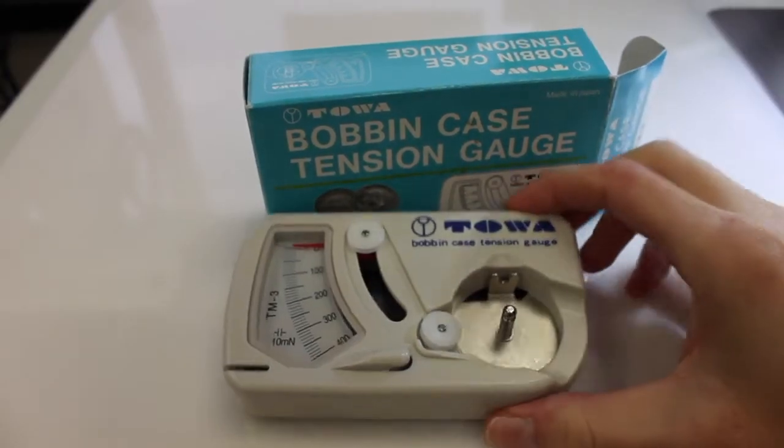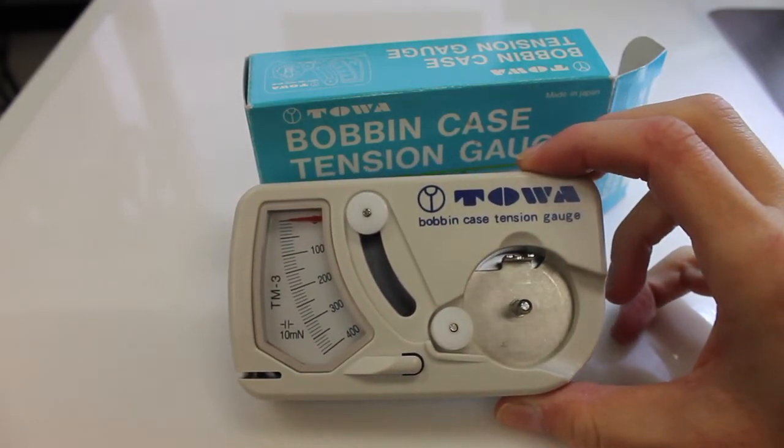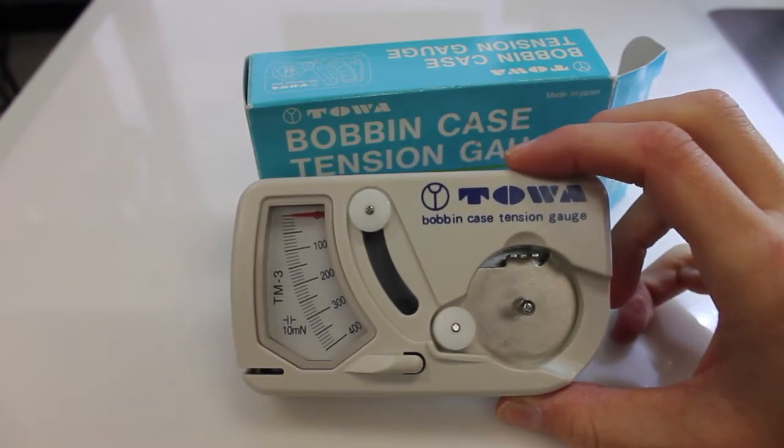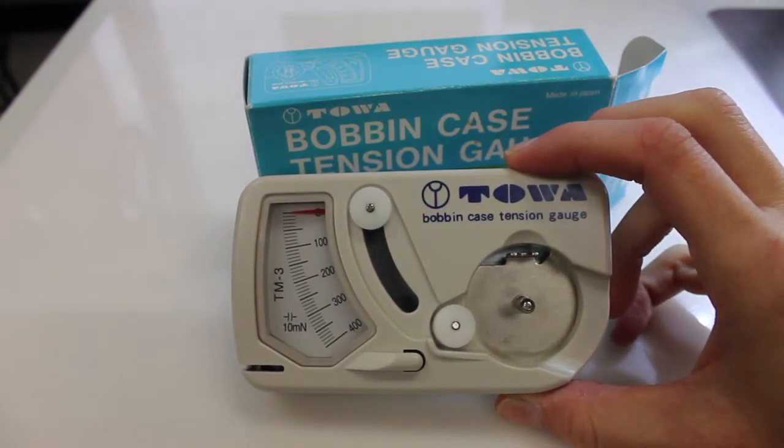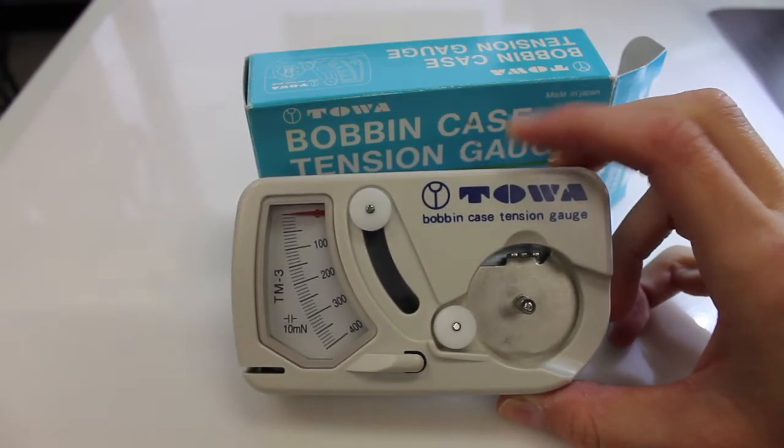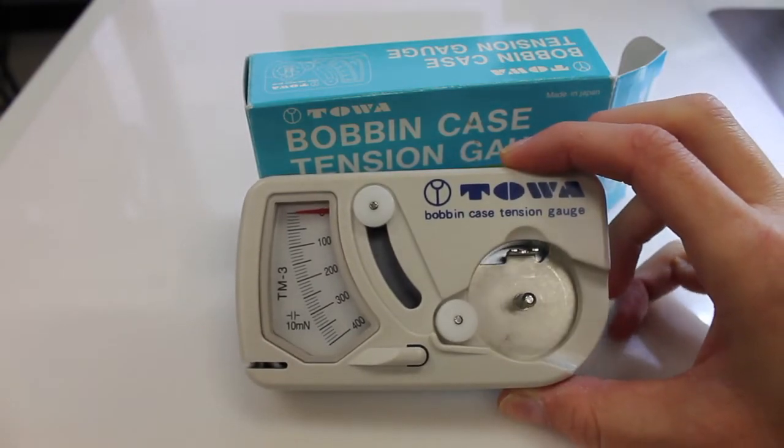How to use your Towa tension gauge on your Juki J350 or TL2200. This is going to set your bobbin case tension perfect so when you sew with your machine, your tensions—all you will have to adjust are your upper tensions, and you know that your bobbin case is perfectly set. So I'm going to show you how to use this.